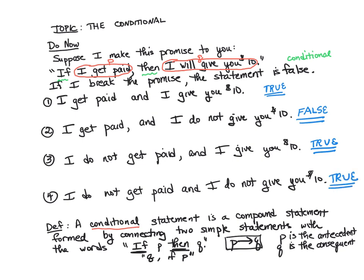This outlines the axiom for the truth table of a conditional. And if you notice, a conditional is more true than it is false — it's false under one condition: if the antecedent is true and the consequent is not true. Otherwise, in every other scenario, the conditional is true.